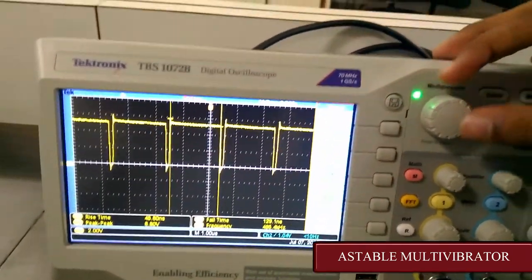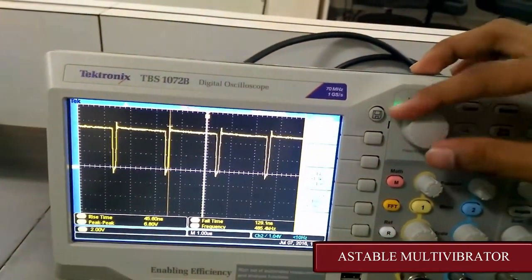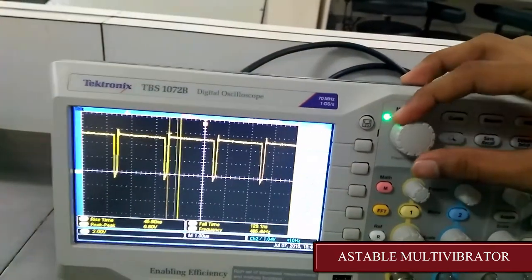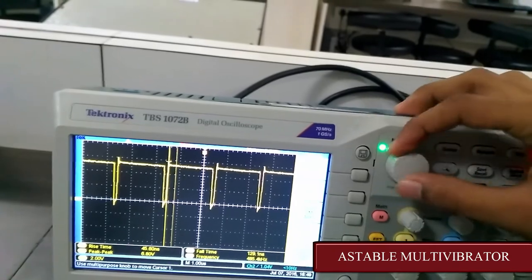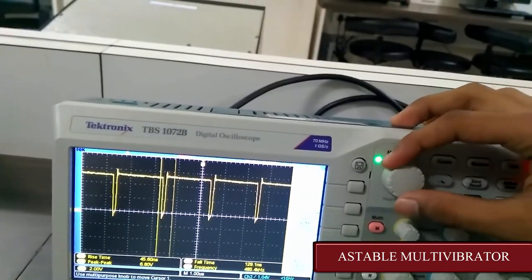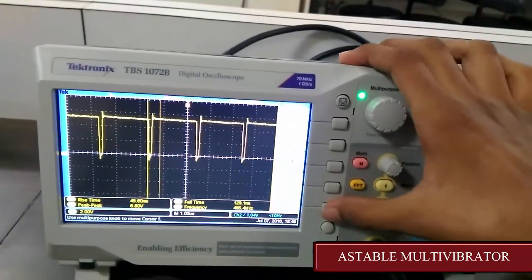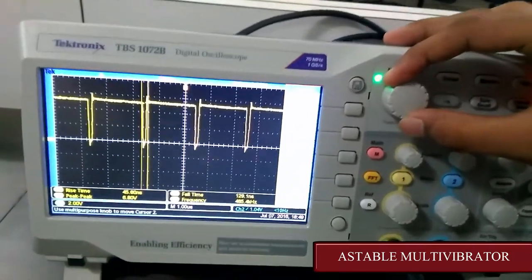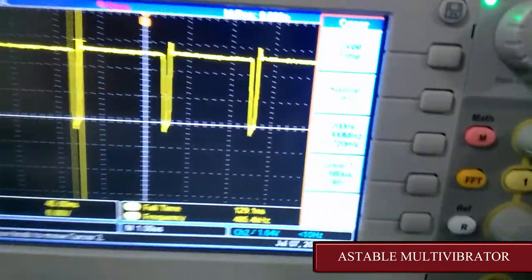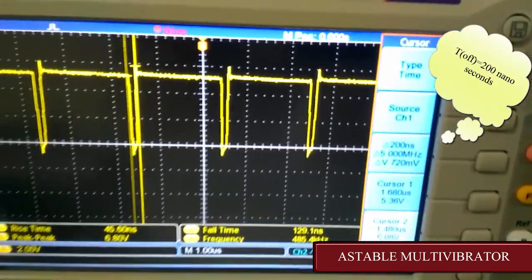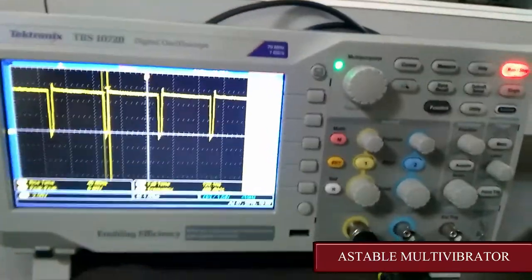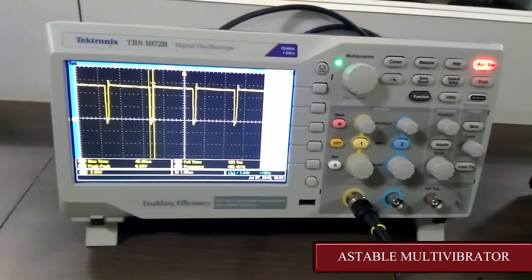Now let's check the value of t-off. For that, the first cursor is set at the start of t-off and cursor 2 is set at the end of t-off. And here we can note that the t-off time is 2.88 microseconds. So thus we can obtain the value of t from t-on plus t-off.